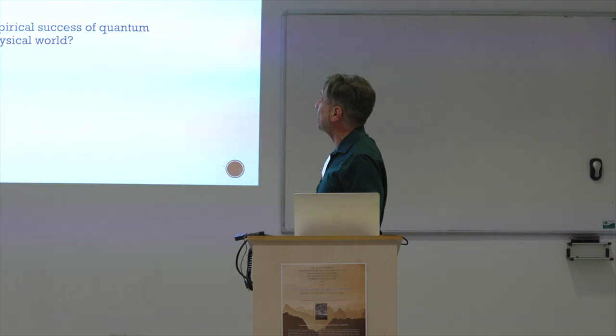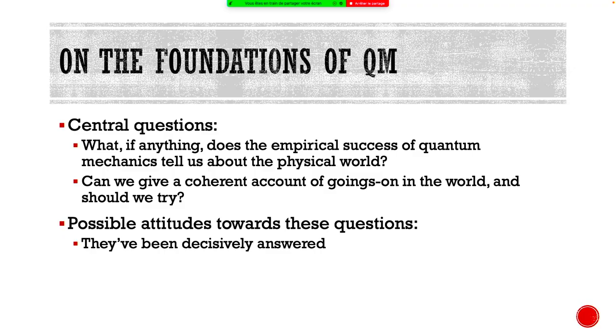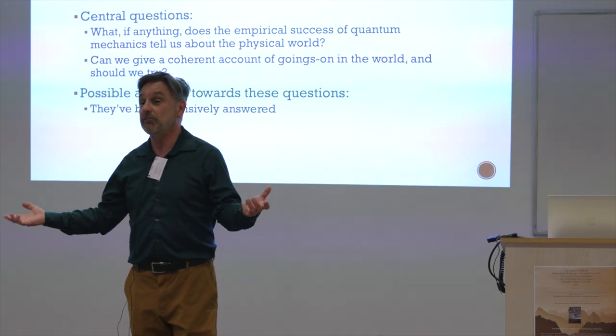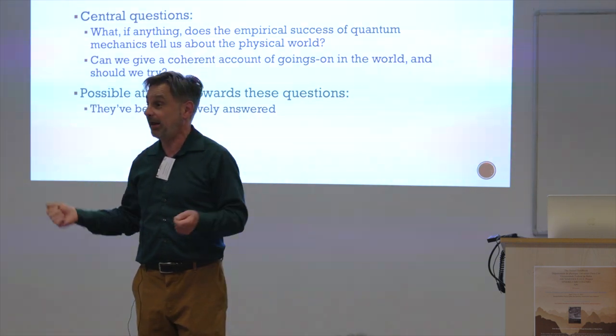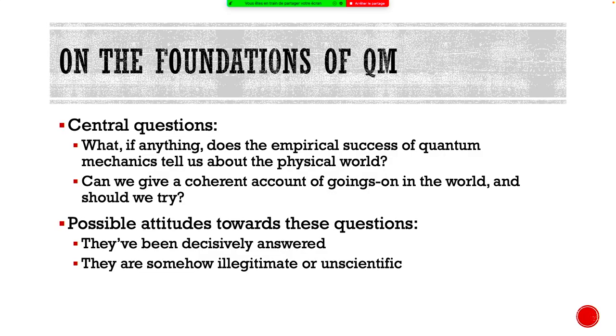So I think again the central question of the foundation of quantum mechanics is what, if anything, does the empirical success of quantum mechanics tell us about the physical world? Can we give a coherent account of goings-on in the world and should we try? Various attitudes towards the question, I think for a lot of this history in the past hundred years, a lot of physicists would have probably told you they've been answered, figured this all out. In one of their paper, paper from the early sixties, Bell and Nauenberg have a footnote where they say that they think that the attitude of most physicists is that all of these questions have been answered and if they only had 20 minutes sometime, they'd understand what that answer is. Sometimes people will proclaim them illegitimate or unscientific and I think most of the people in this room would think they are indeed worth pursuing.